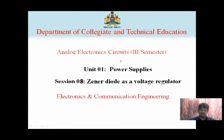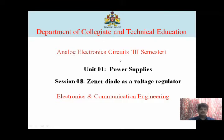In a linear regulator we use a transistor as the active pass element. In a series linear regulator, the active pass element is connected in series with the load. In a shunt linear regulator, the active pass element transistor is connected across or parallel to the load — so it is called a shunt linear regulator.